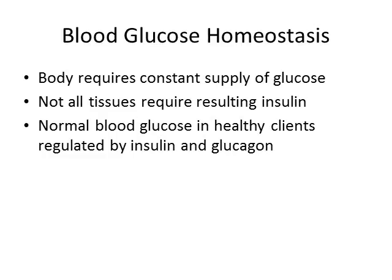That normal range of 70 to 110 comes from the American Diabetes Association. Sometimes you'll see 130 cited, but they're trying to lower that threshold in hopes that we can catch and control elevated blood sugar earlier rather than later.